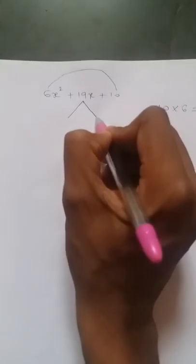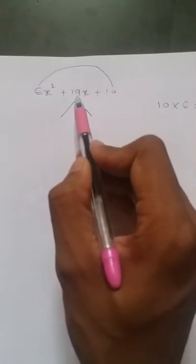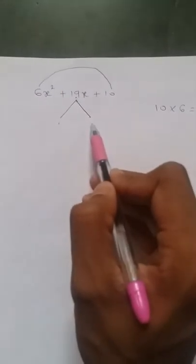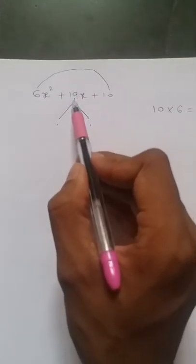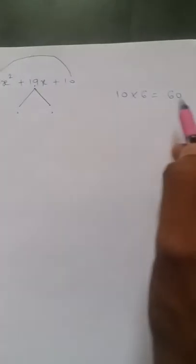How will we split 19x? We need to write it as two more terms. If we add or subtract those two terms we need to get 19, and if we multiply those two terms we need to get 60 as the answer.